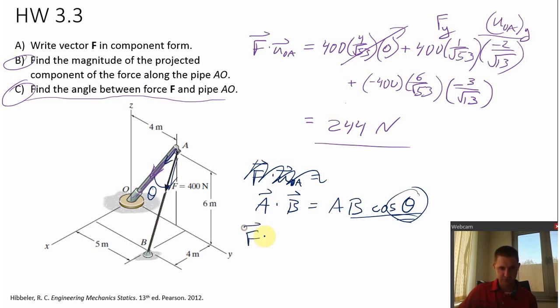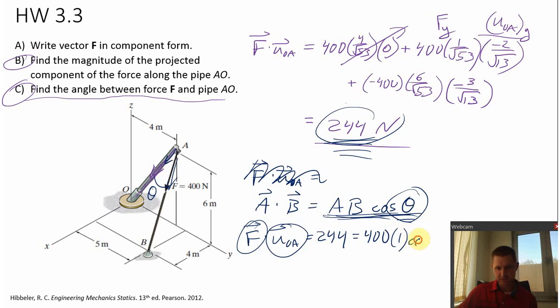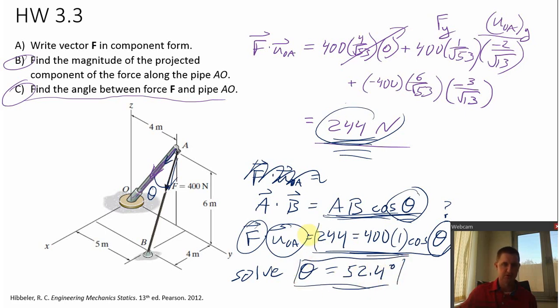So for us, if we do the dot product of U from O to A, well I already know that answer right here to be 244, right? But how else can I calculate this 244? I can calculate it using this formula. So what's the magnitude of F? The magnitude of F is 400. What's the magnitude of a unit vector? Well that's one. And then I need the cosine of the angle in between them. And that's what I'm looking for. So right here is one equation and one unknown. I can go ahead and solve that for theta there. And do your calculator work. The theta comes out to be 52.4 degrees.